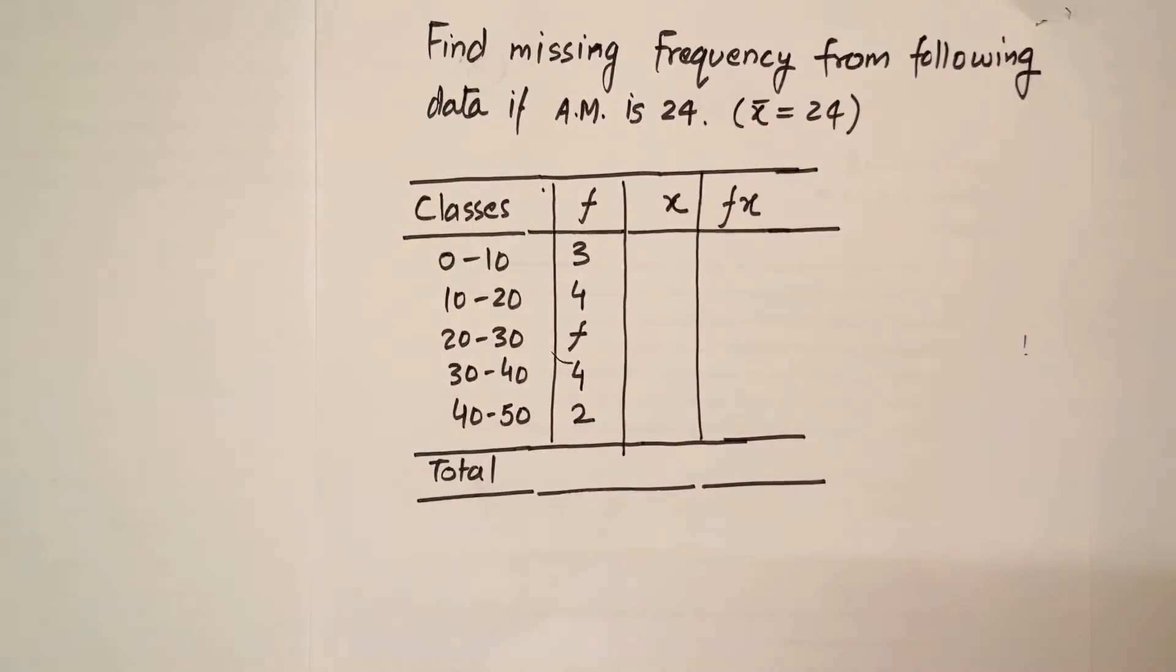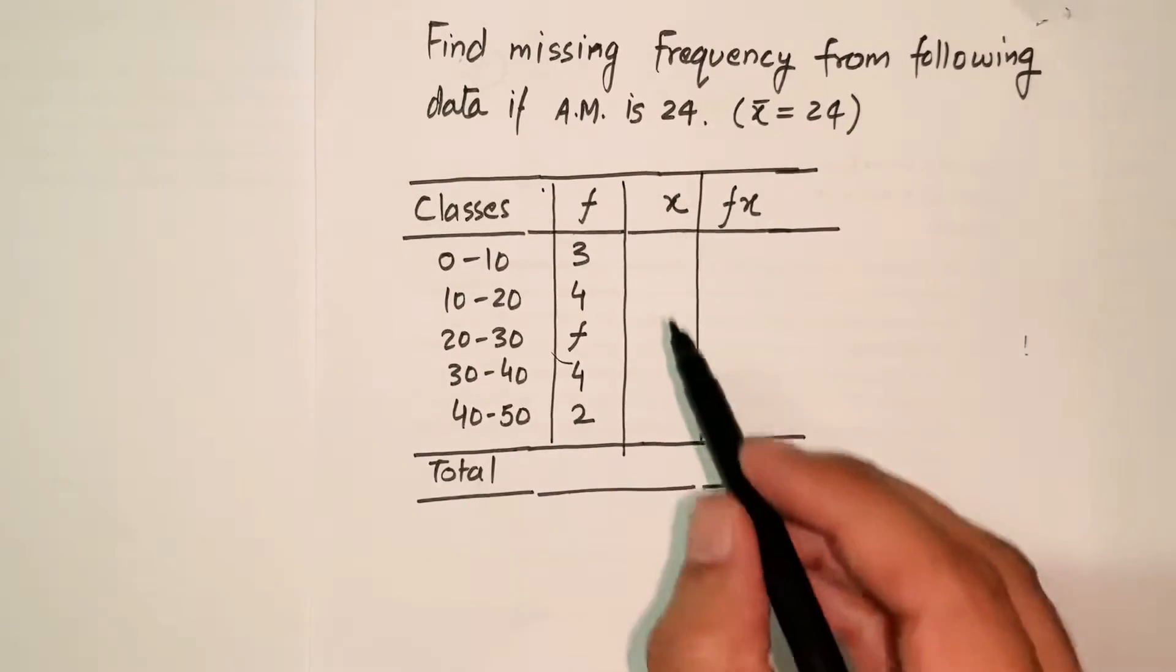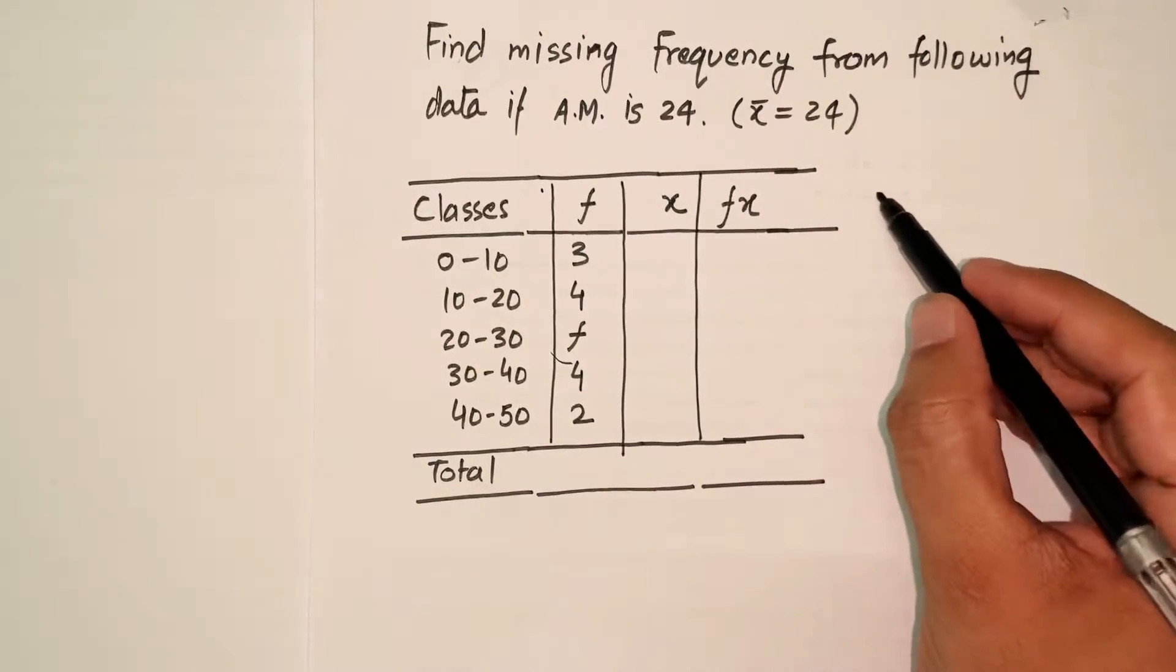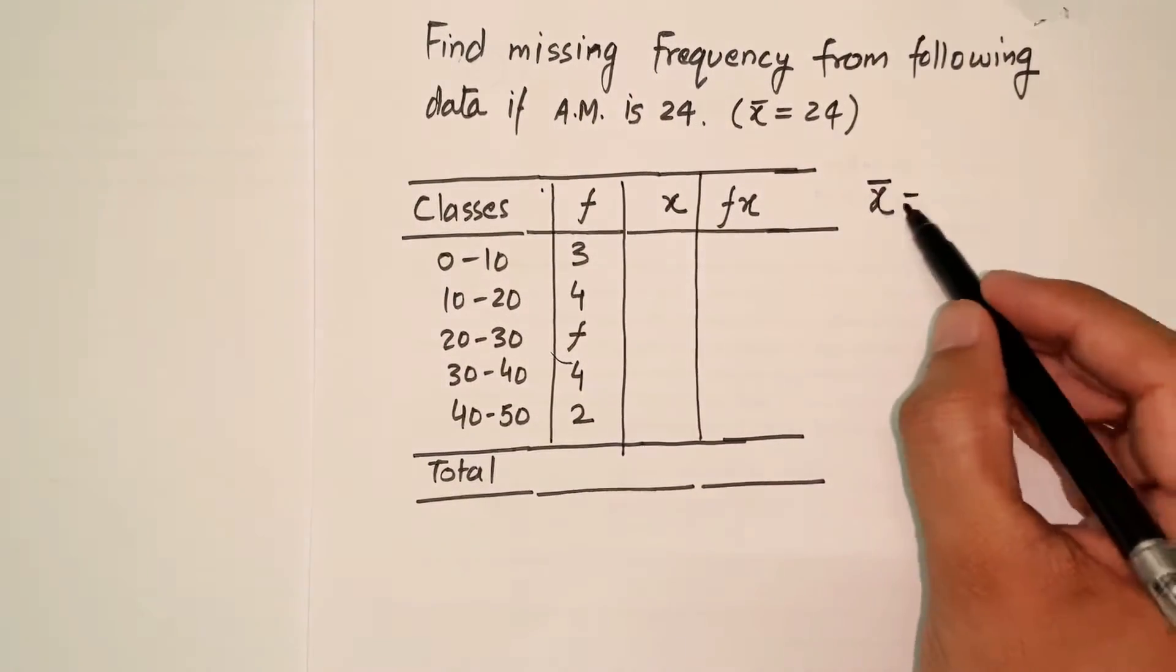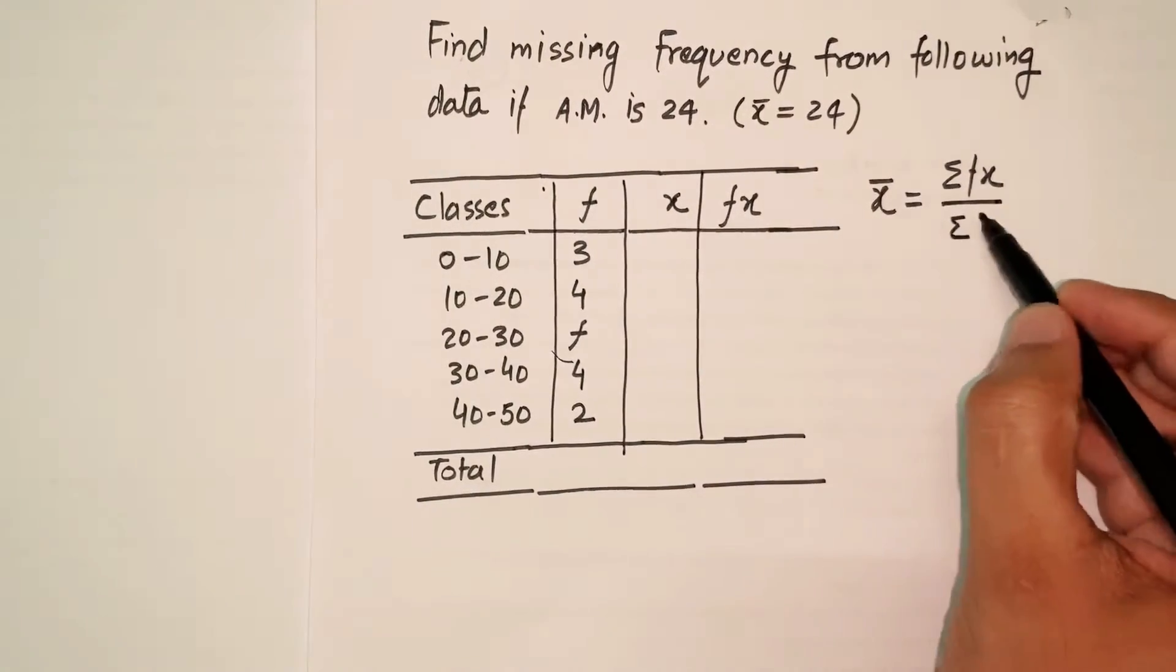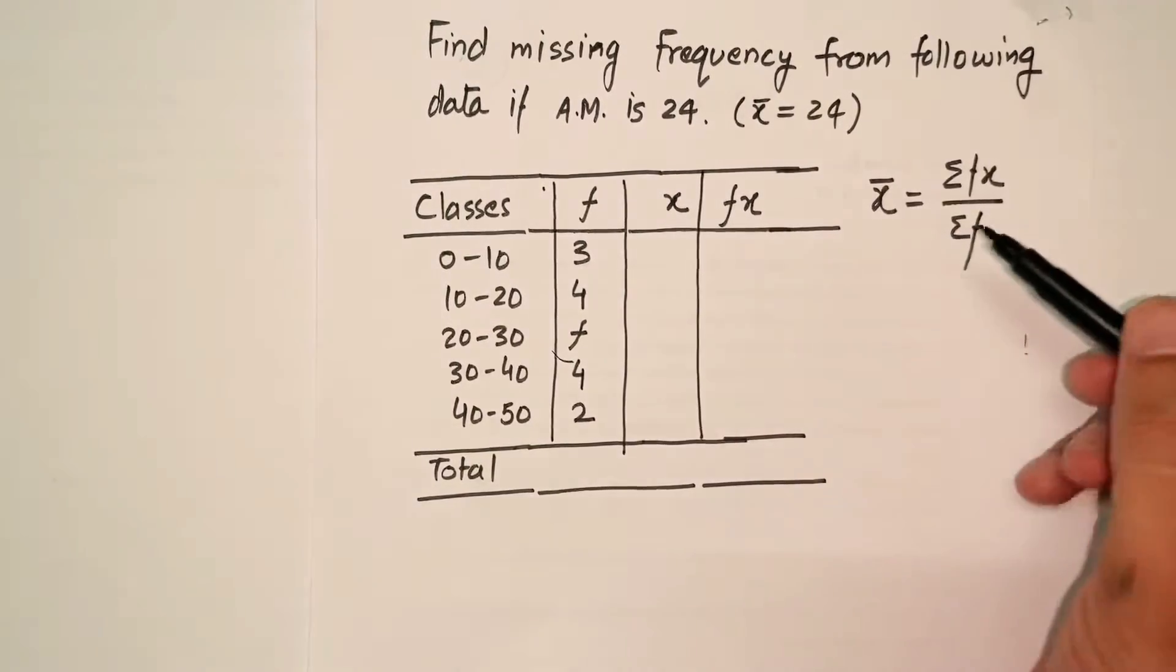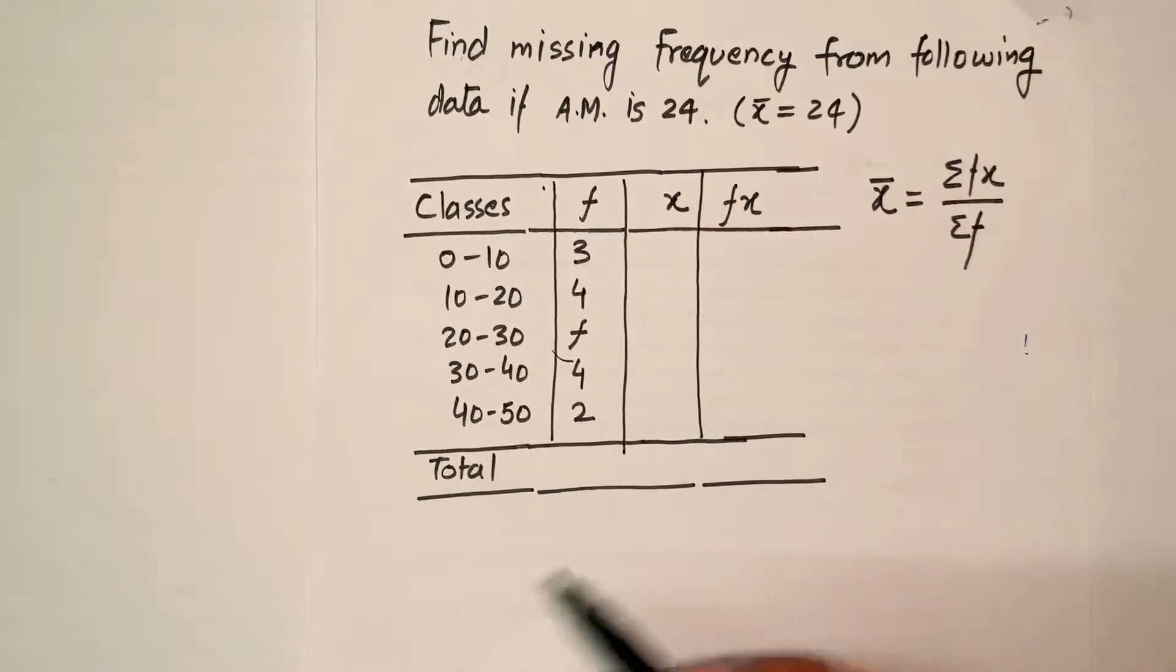We'll be using the fundamental concept of arithmetic mean. First of all we will calculate x because we know the formula for arithmetic mean: x̄ is summation of fx divided by summation of f. So I need fx and then I need summation of f.